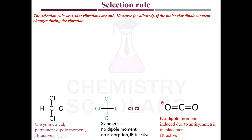Let's understand with examples. Looking at homoatomic diatomic molecules and symmetrical polyatomic molecules — both are symmetrical, so there is no dipole moment, no absorption, and they are IR inactive. For unsymmetrical molecules, there is a permanent dipole moment and they will be IR active. CO₂ has no dipole moment because it's linear, but dipole moment can be induced due to asymmetric displacement, making it IR active.